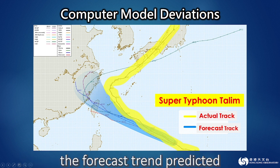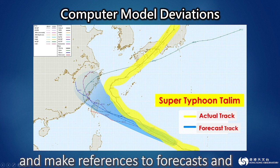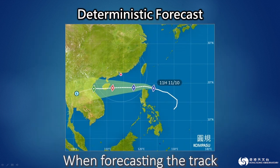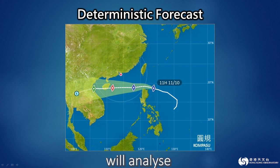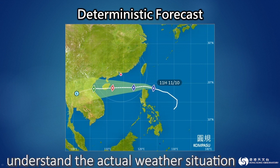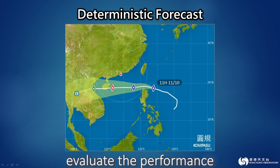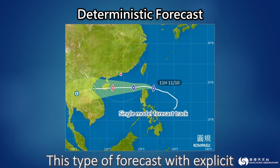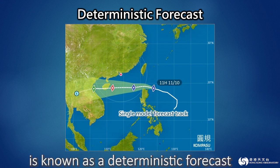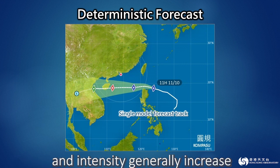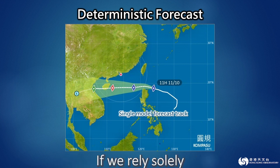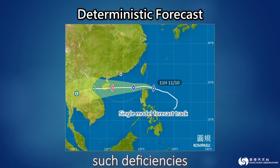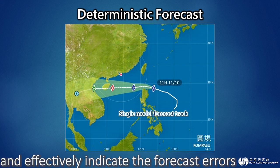Moreover, we should pay attention to the forecast trend predicted by models over time, and make references to forecasts and warnings issued by the official meteorological services based on their analysis of local and overall situations. When forecasting the track and intensity of a tropical cyclone, forecasters will analyze all observation data in detail, consider forecasts of multiple computer models, evaluate the performance and stability of the models, and formulate an integrated forecast track based on their experience. This type of forecast is known as a deterministic forecast. However, the errors in forecasting track and intensity generally increase with forecast time. The ensemble forecast and probabilistic forecast could make up for such deficiencies and effectively indicate the forecast errors in the tropical cyclone track.